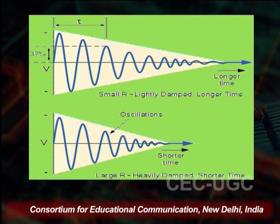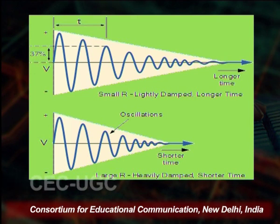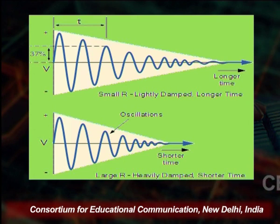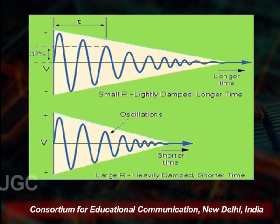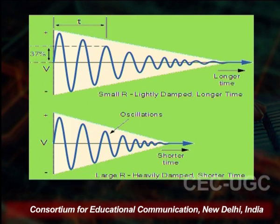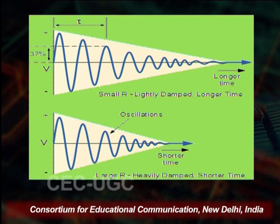In the LC circuit we get damped oscillations, as seen on screen. With a small r, there is a larger time for the damping of the oscillation; when there is a large r, the damping time is very short.